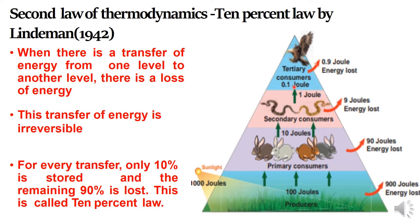The tertiary consumers store only 0.1 joules, and the remaining 0.9 joules of energy is lost. So at each trophic level, only 10% of energy is stored in the organisms, while the remaining 90% of energy is lost. This confirms the second law of thermodynamics — that during the transfer of energy from one level to another, there is a loss of energy.